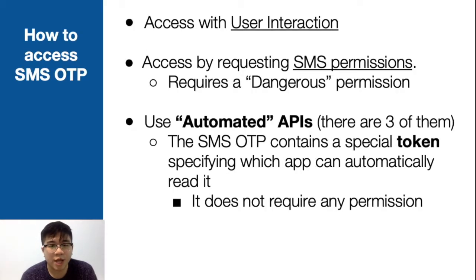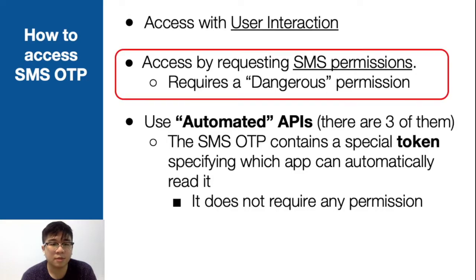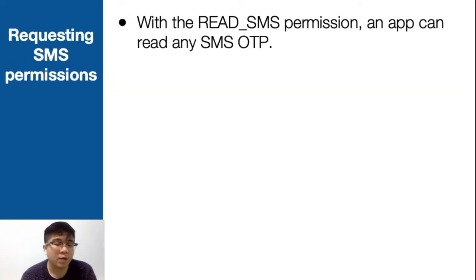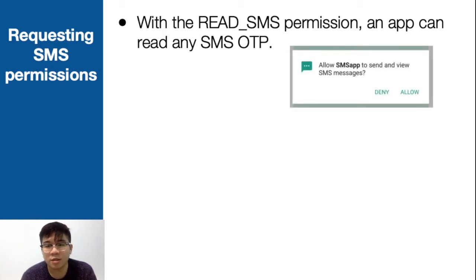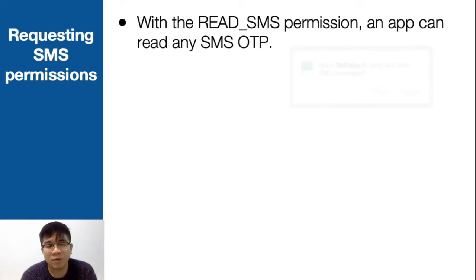Other than user interaction, let's talk about SMS permissions. With the read SMS permission, an app can read any SMS OTP. As you see in this picture, this is how Android deals with permissions. If you click allow, you're allowing the SMS app to send and view all your SMS messages. And people might say: if you give an app permission, you're giving them permission, and if your money gets stolen you cannot blame anyone — that's your own fault.